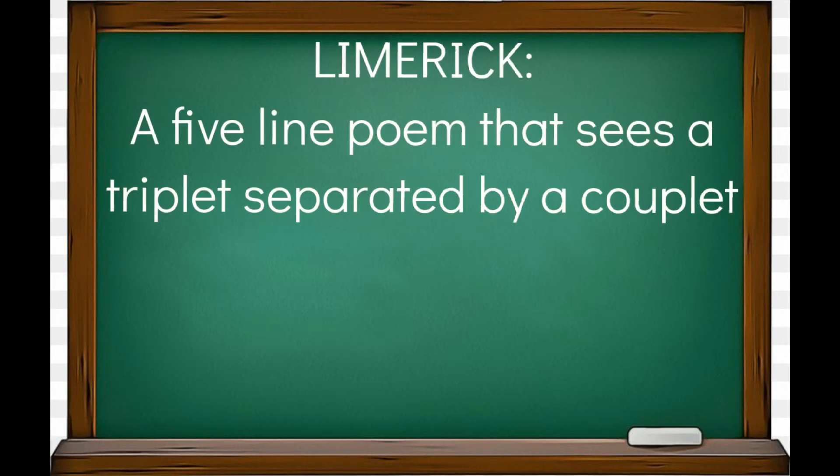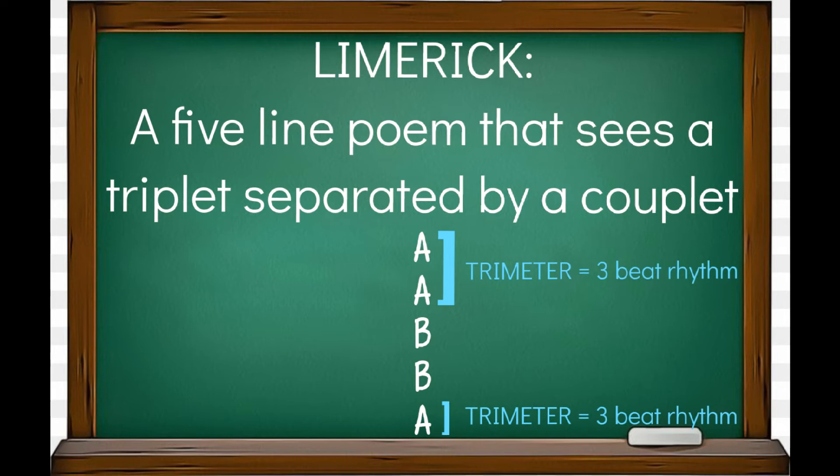So now that we know some of its history, let's take a look at what makes a limerick. A limerick is a five line poem which sees a triplet separated by a couplet. This means that it has an AABBA rhyme scheme. Lines 1, 2 and 5 have a trimeter which means a three beat rhythm, and lines 3 and 4 are shorter with a dimeter which is a two beat rhythm.